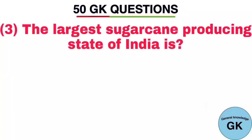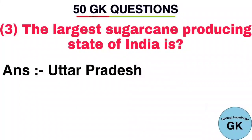Question number 3. The largest sugarcane producing state of India is. Answer: Uttar Pradesh.